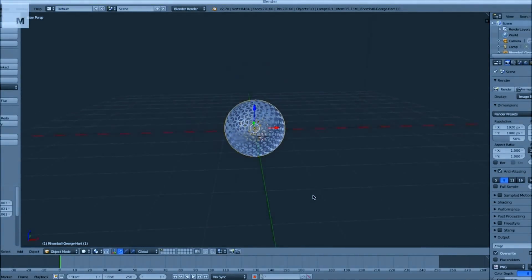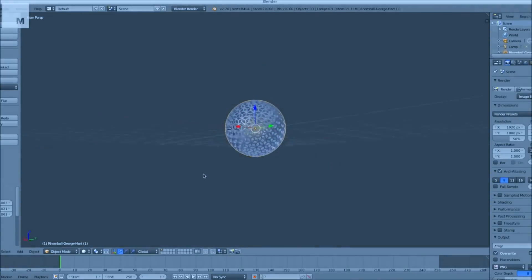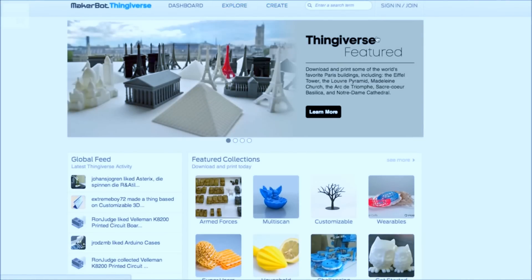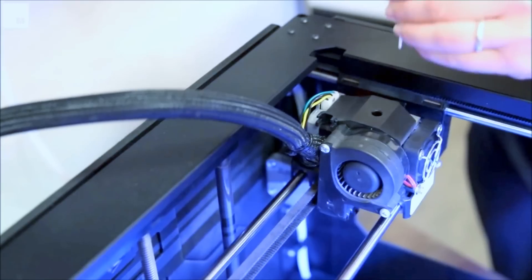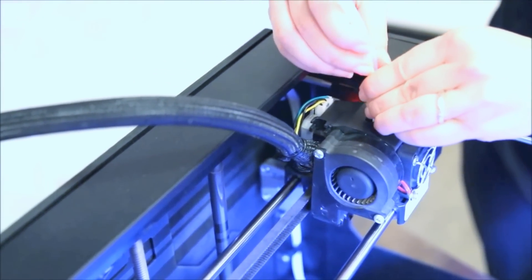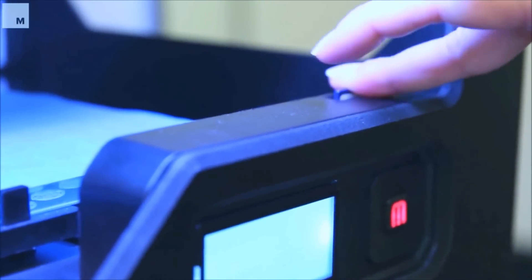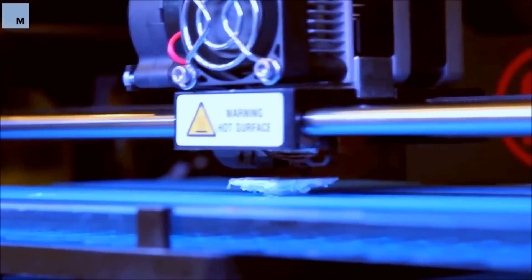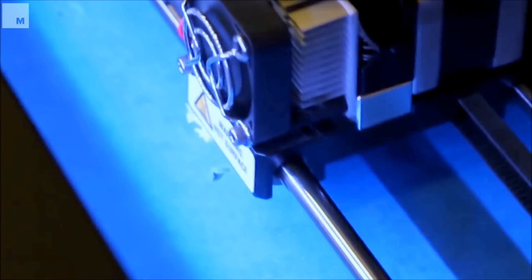Open source software is available to prepare the file for the printer. Material is fed—for plastic, it is filament or resin. Data is fed and printing begins. The printer material will melt and deposit layer by layer, and the object will be ready.